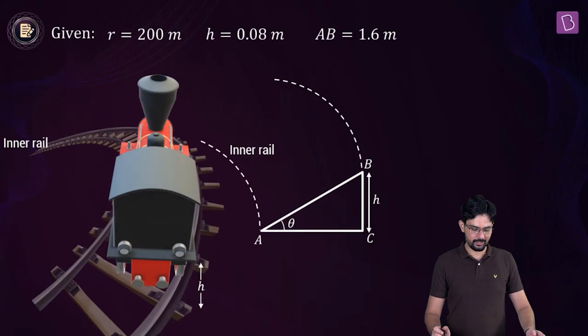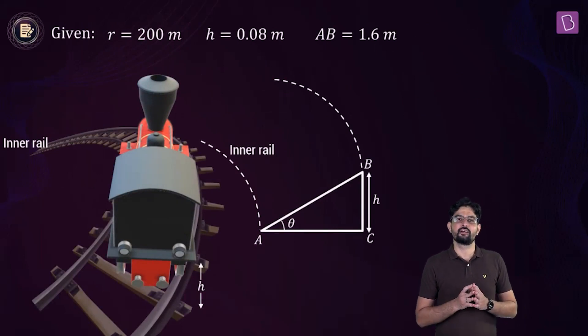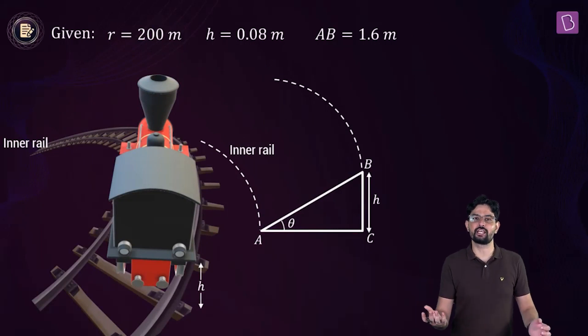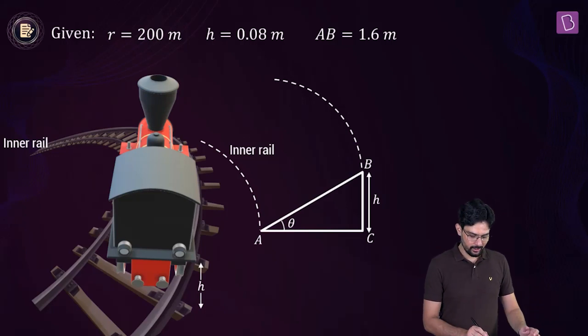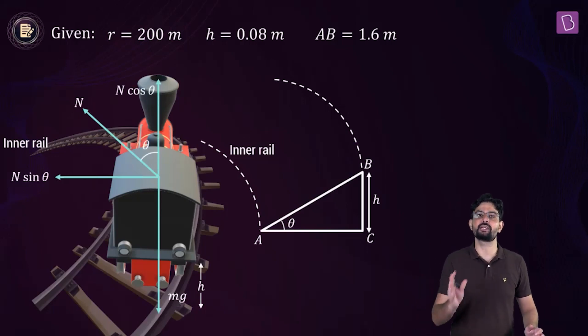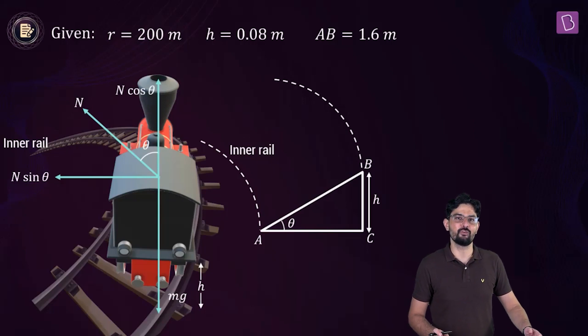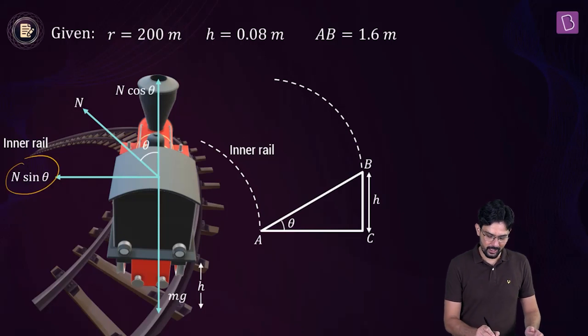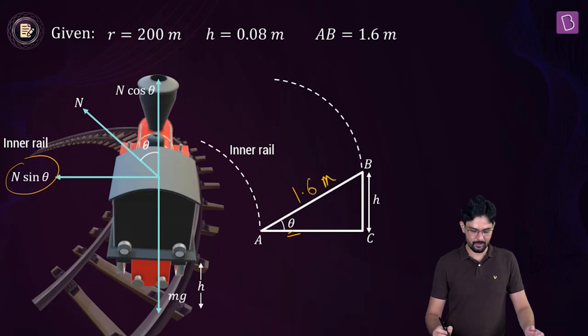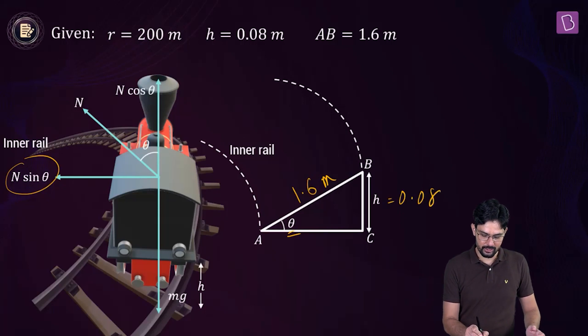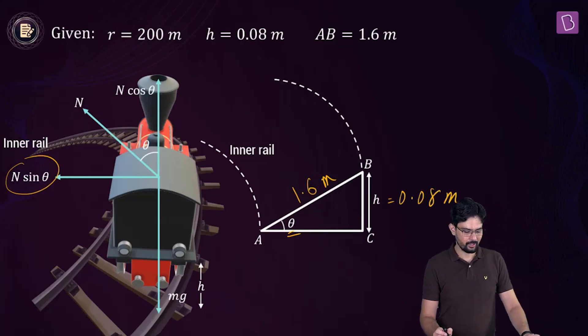So it is going to look something like this. Now, if there is no side pressure, then the friction force is going to be 0. And the component of the normal reaction acting towards the center of this circle is going to provide the necessary centripetal force to this train. So obviously the train is going to move in a circle and some force has to provide the centripetal force. And who is going to do that? N sine theta, where you can see that theta is this angle. And according to the problem statement, the distance AB, which is the distance between the two rails is 1.6m. The value of h is given to you as 0.08m.